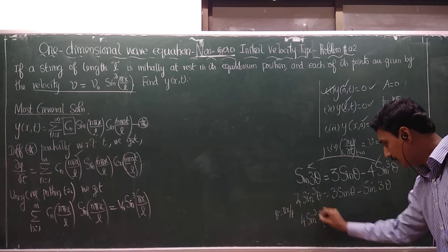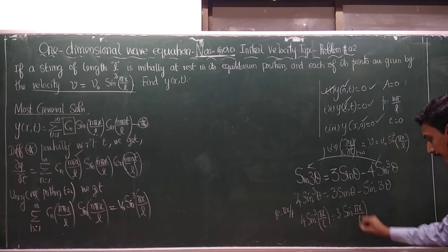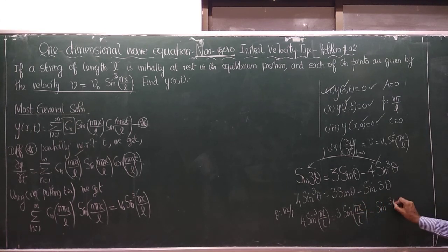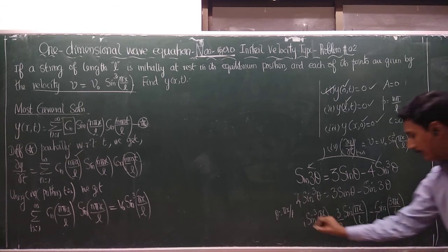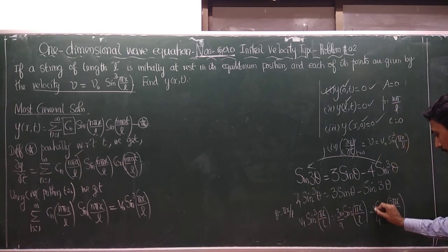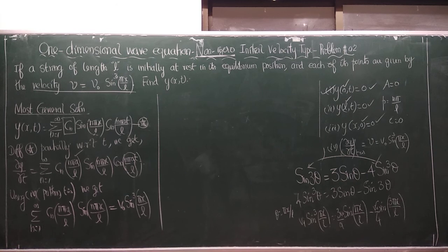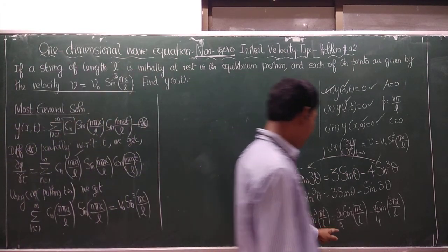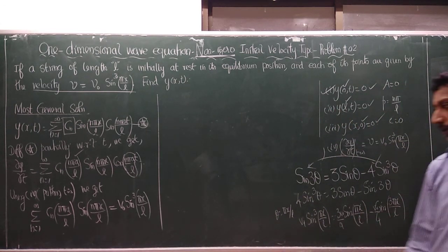Substituting θ = πx/L: 4 sin³(πx/L) = 3 sin(πx/L) − sin(3πx/L). Dividing by 4 and multiplying by V₀: V₀ sin³(πx/L) = (3V₀/4) sin(πx/L) − (V₀/4) sin(3πx/L). So the right-hand side becomes (3V₀/4) sin(πx/L) minus (V₀/4) sin(3πx/L).